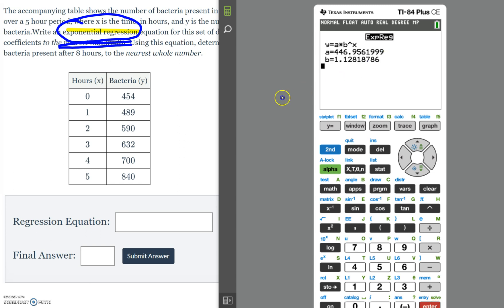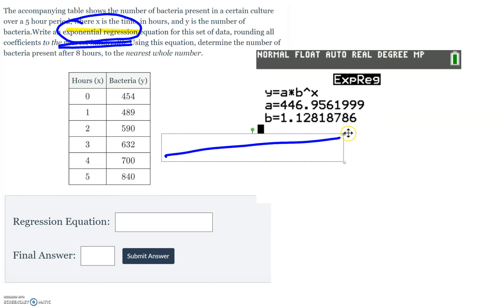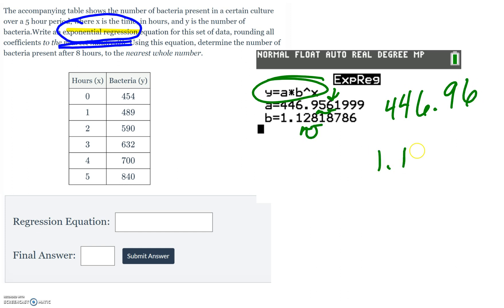We're going to hit enter. So now that we have our a and b values, we're just going to substitute them into this equation. And again, it says round to the nearest hundredth. So we're going to look at the third decimal. It's greater than 5, so that's 446.96. We round up. And then look at the third, 1.13 for our b value. So y equals a times b to the x. We're just substituting again into that equation, our a and b values that we found.